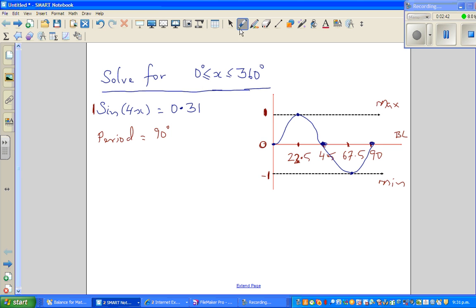Now the question is, when is this 0.31? So 0.31, this is 0.5, so 0.31, let me use dotted, comes somewhere here, roughly. So 0.31 is here. So the question is, what is this?